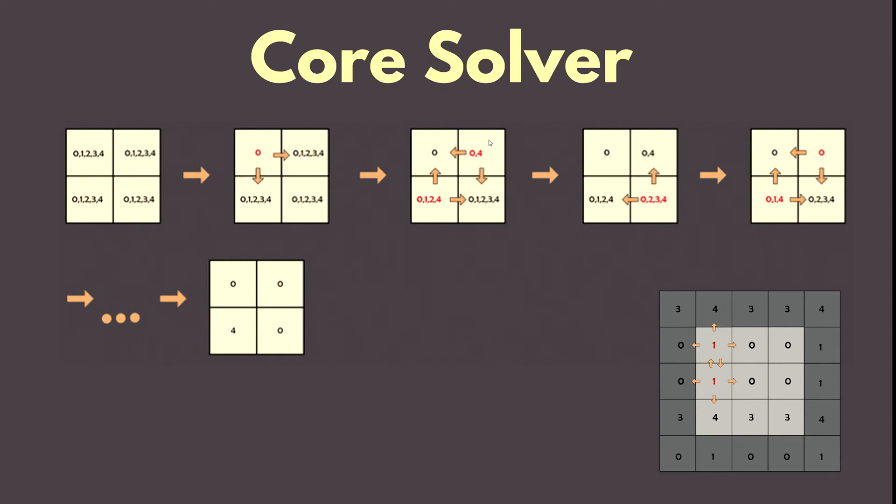Going even further, we will end up with a final result. As mentioned, we will be iterating over these steps to receive an output, but we still don't know how to choose the next tile to collapse. This is what we will be focusing on in the next video.